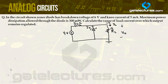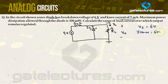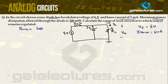Let's look at the first example. In the circuit shown, the Zener diode has a breakdown voltage VZ of 6 volts. The minimum current IZ(min) — the knee current — is 5 milliampere. The maximum power dissipation allowed through the diode is Pmax = 300 milliwatt. We need to calculate the range of load current over which the output remains regulated.